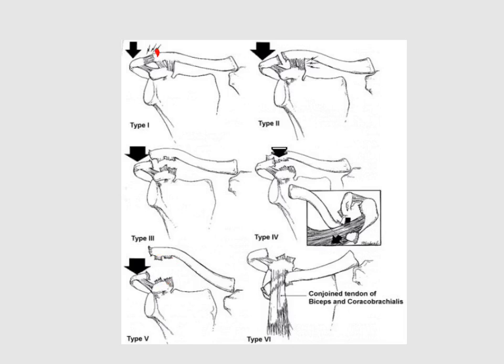To summarize: Type 1 — simple sprain of the acromioclavicular ligament. Type 2 — tear in the acromioclavicular ligament. Type 3 — tearing of the acromioclavicular and coracoclavicular ligaments with mild upward displacement of the clavicle. Type 4 — posterior deviation of the clavicle behind the acromial process. Type 5 — marked upward dislocation of the clavicle.